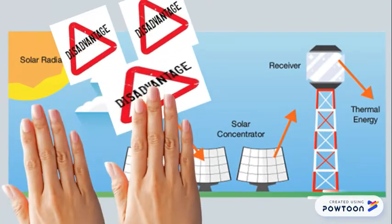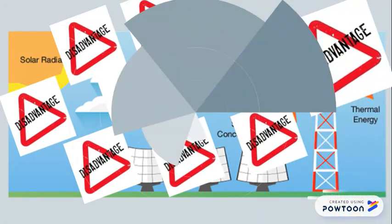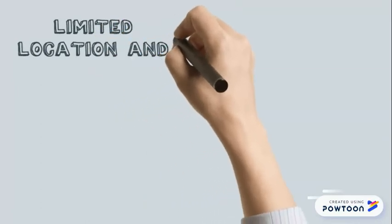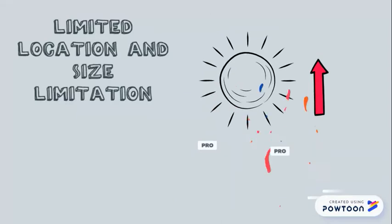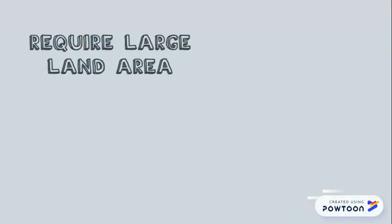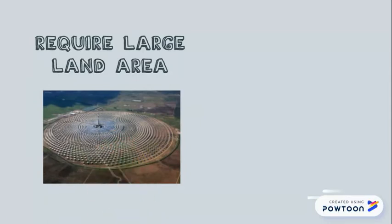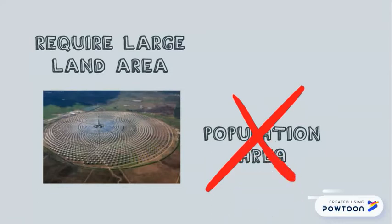Disadvantages of solar thermal power generation: Limited locations and size limitations. Solar thermal energy can only be built in places which have high amounts of solar radiation. They can be built in deserts mostly and require a large land area. This means it's not possible to build them in populated areas. Solar thermal energy also can only be built in large sizes.